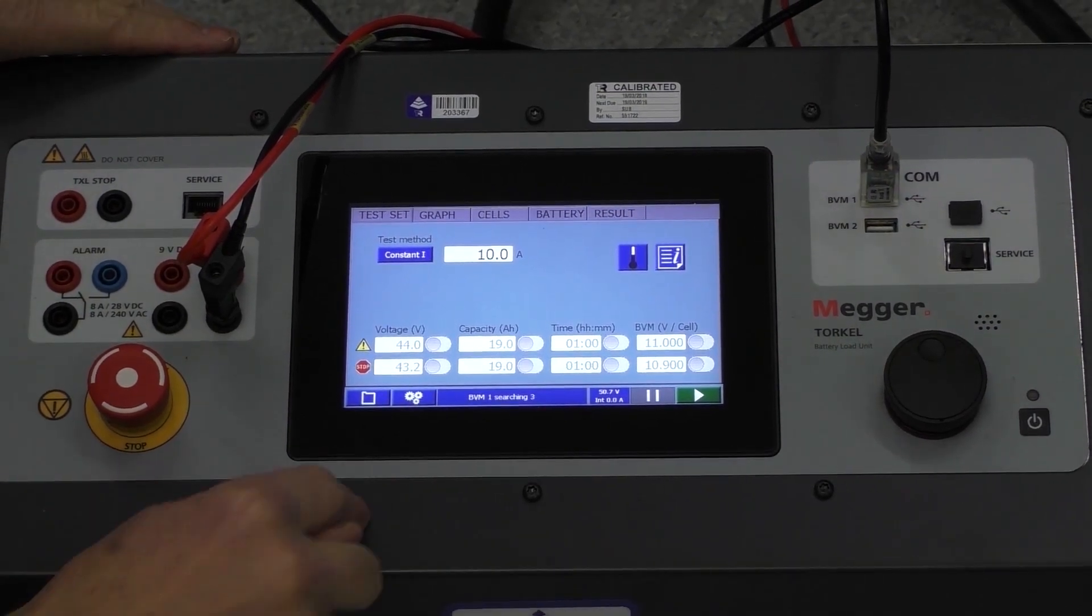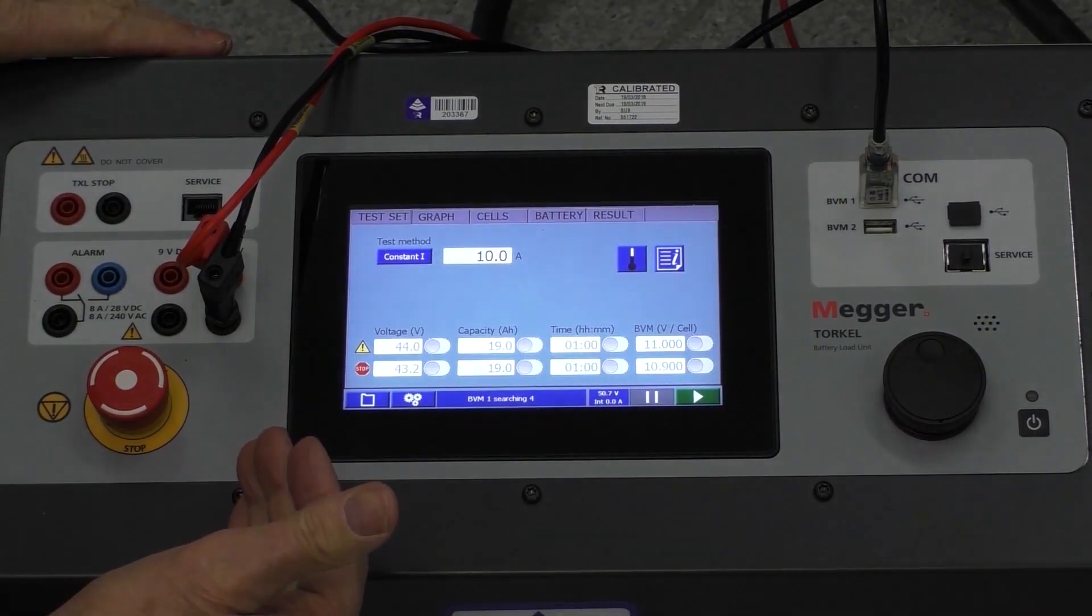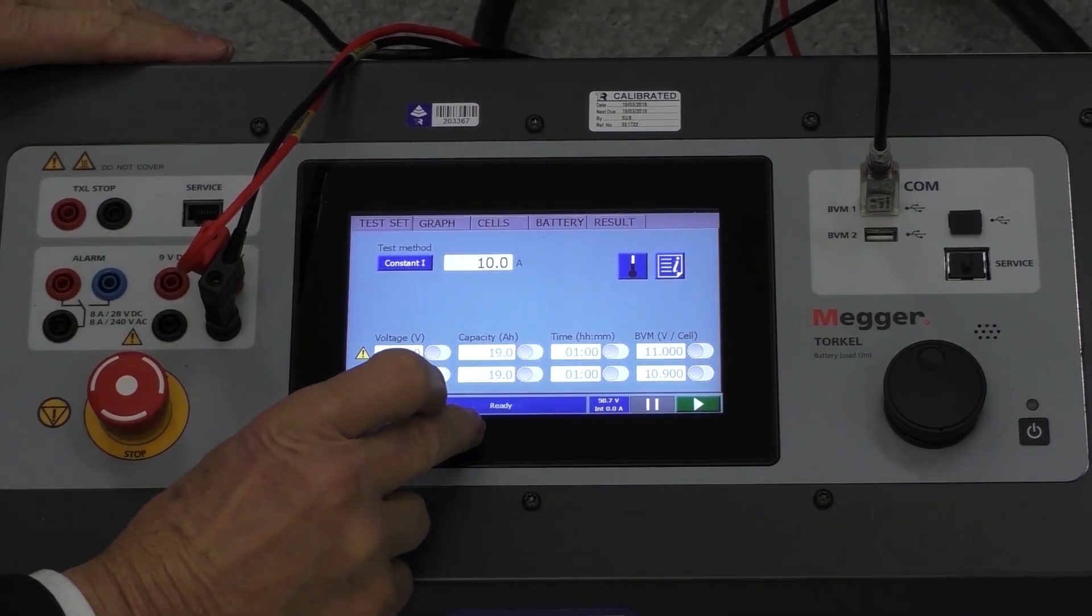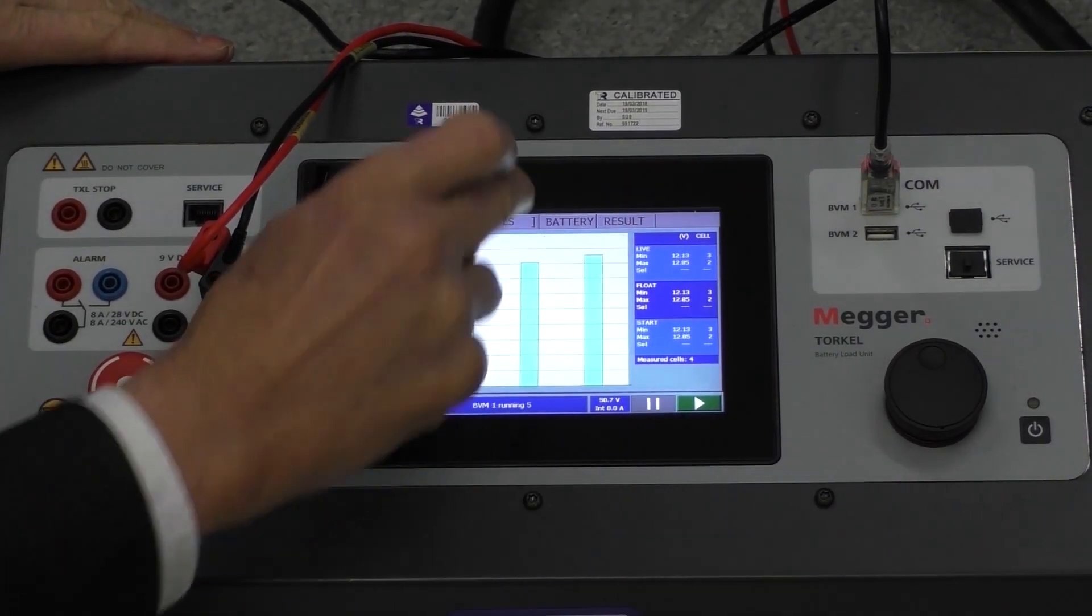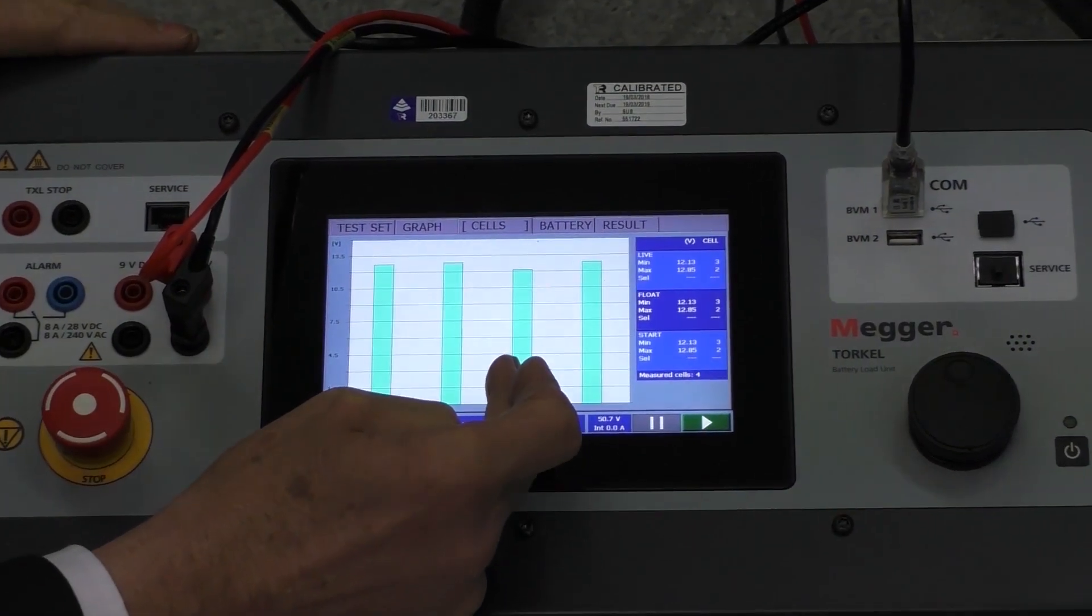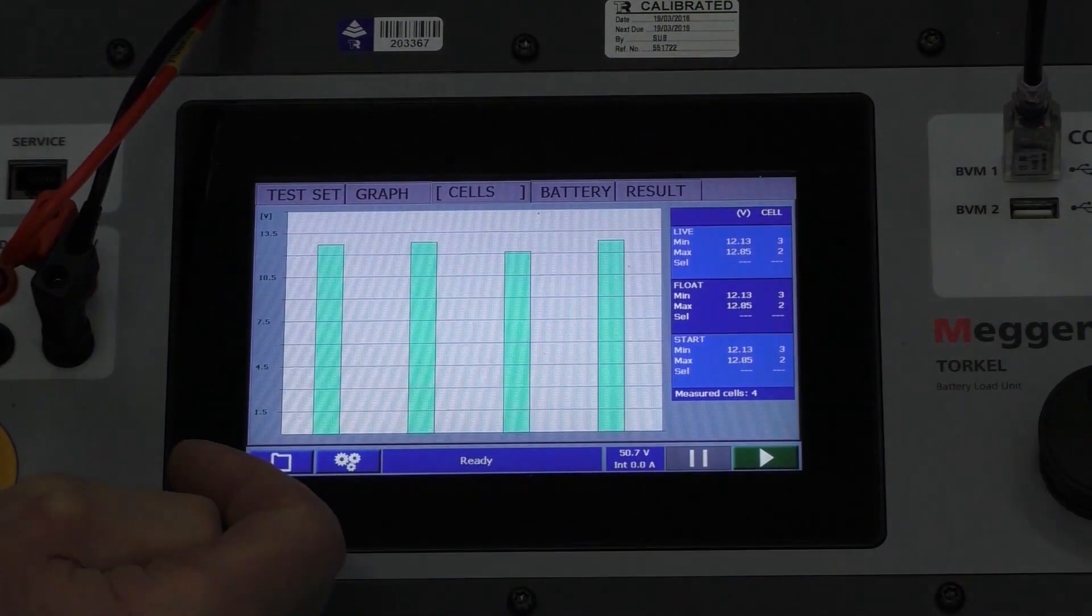And we've now started the unit. It's found the BVMs and that's all running happily. So it actually gives you the current cell voltages. You can see here that one of them is a little bit lower than the others. These are an old set of batteries.